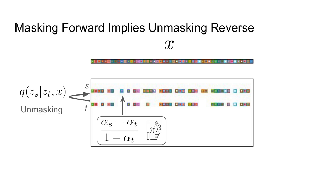Next, we consider the posterior, or unmasking, distribution. This corresponds to the probability of a word being unmasked, given that we have its later masked version, as well as the original x itself. To calculate this probability, we again apply a Bayes rule and get a term alpha s minus alpha t over 1 minus alpha t, which represents the probability of a word being unmasked between steps t and s.